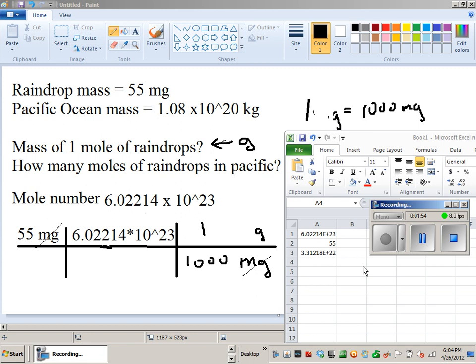So that's the mass you get, 3.31 times 10 to the 22nd, and if that's the mass, notice that it's bigger than the mass of the Pacific Ocean. So that means if we divide the Pacific Ocean mass by the mass that we got, that will tell us how many moles of raindrops are in the Pacific Ocean.